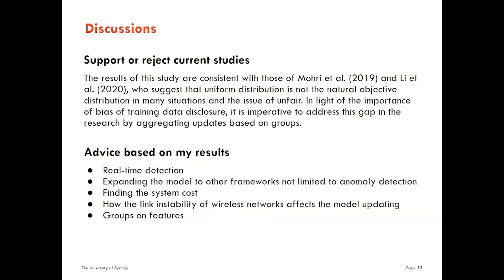From the results of this study, we can see that this is consistent with previous researchers who suggest the issue of unfairness. Addressing the bias of training data is imperative, and we address this gap by aggregating updates based on groups. Based on our results, there are still some limitations: we didn't implement real-time detection, and it would be interesting to expand the model to other frameworks beyond anomaly detection, examine system cost, and investigate how link instability of wireless networks affects model updates. Lastly, we could group based on features rather than the category of IoT devices.